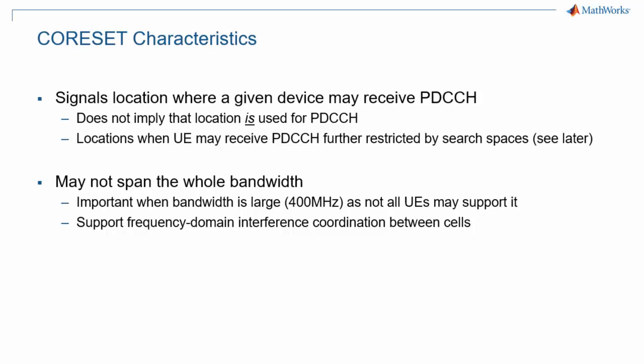A core set represents locations where a given device may receive PDCCH. Importantly, there may be no control transmission at some locations in time and frequency. To simplify control information search in the UE, actual PDCCH locations may be further restricted by search spaces, as explained later.